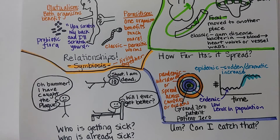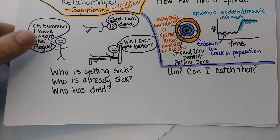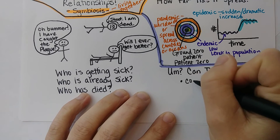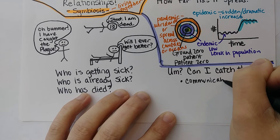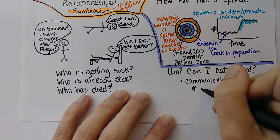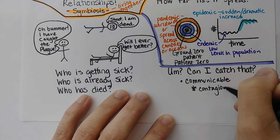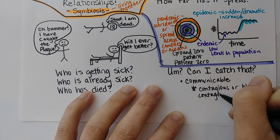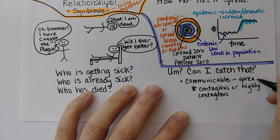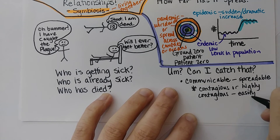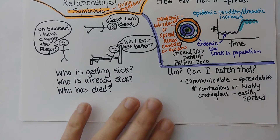How easy is it to catch something? If it is able to be passed at all, it's called communicable — it can be communicated to another person. If it is very easily spread to another person, then we describe it as contagious, or even highly contagious. So if it is spreadable at all, we call it communicable, and if it's very easily spread, we say it's contagious or highly contagious.